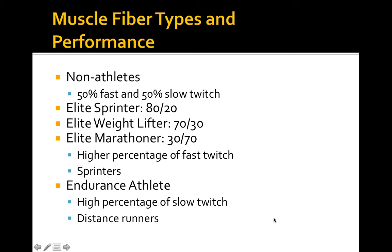On average, an untrained person — the average couch potato — is about 50/50 fast to slow twitch muscle fibers. At elite levels, athletes tend to favor one or the other. Elite sprinters are about 80/20 fast twitch; elite weightlifters 70/30 fast twitch; elite marathoners are the opposite, being heavier on slow twitch due to their endurance-based aerobic training.